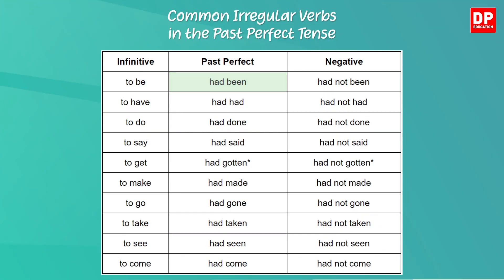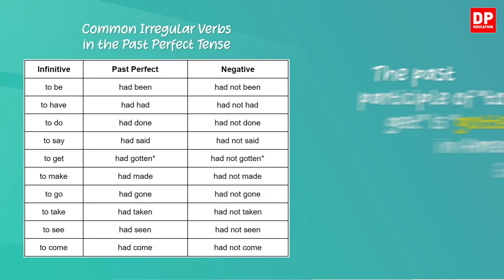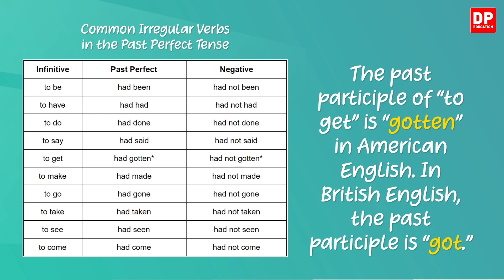Now let's look at some common irregular verbs. To be: had been / had not been. To have: had had / had not had. To do: had done / had not done. To say: had said / had not said. To get: had gotten / had not gotten. To make: had made / had not made. To go: had gone / had not gone. To take: had taken / had not taken. To see: had seen / had not seen. To come: had come / had not come. Note: the past participle of 'to get' is 'gotten' in American English; in British English it is 'got.'